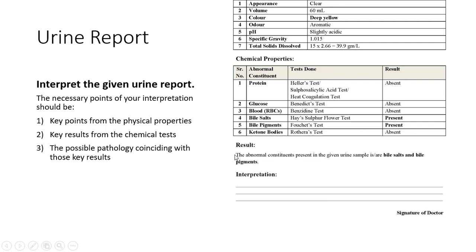This is how you consolidate results based on key points from physical properties, key results from chemical tests, and the possible pathology. The question will ask you to interpret the given urine report. Interpretation means writing the conditions in which bile salts and bile pigments are present in urine. Normally these are not present — they are abnormal constituents. Based on positive findings, you interpret the urine report.